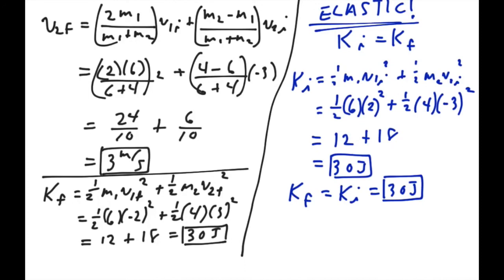That shortcut may not always be an available option, so we still want to keep our equations handy so we can use those. The answer to this problem is 30 joules.